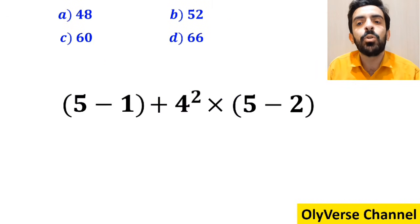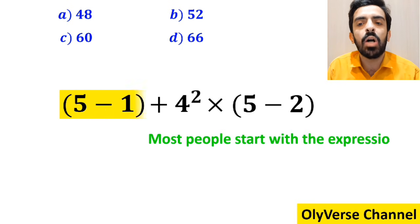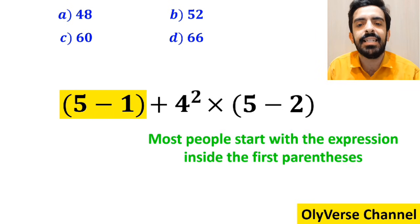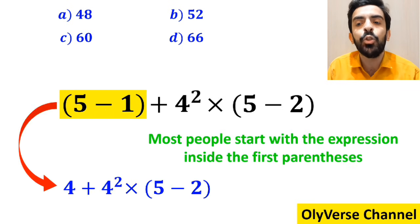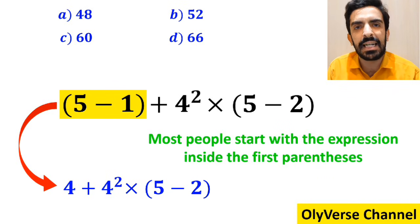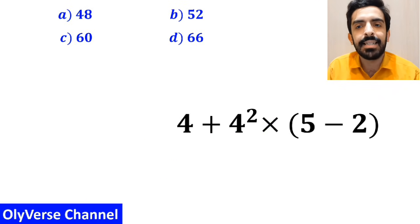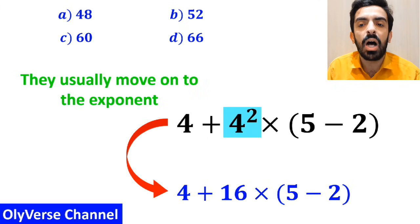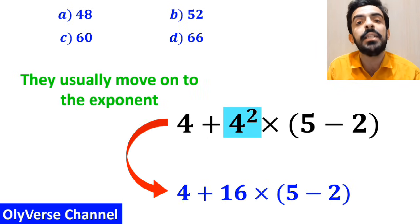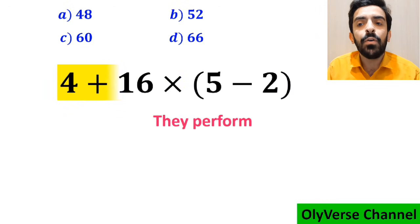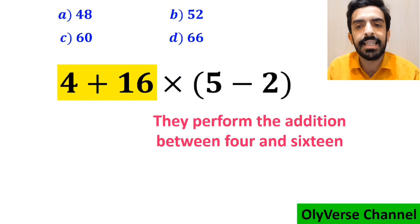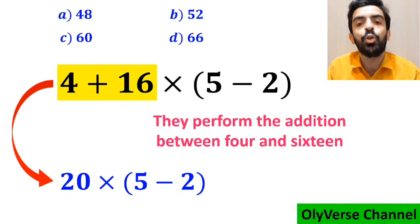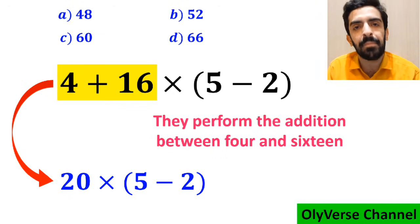As a first step, most people start with the expression inside the first parenthesis and simplify the expression to 4 plus 4 squared, multiplied by (5 minus 2). Then they move on to the exponent and replace it with 4 plus 16 times (5 minus 2). Next, they perform the addition between 4 and 16, simplifying to 20 times (5 minus 2).